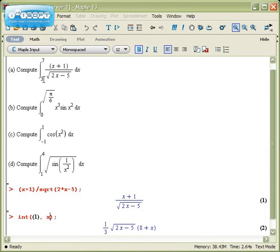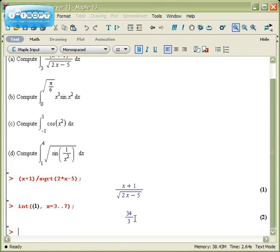This is an integral that goes between x values of 3 and 7. So what I'm going to do here is I'm going to modify the int command and write it as x equals 3 dot dot 7. I'm going to put a range of x values. And when I rerun the command now, instead of getting an antiderivative, I get 34 thirds. I get a numeric value.